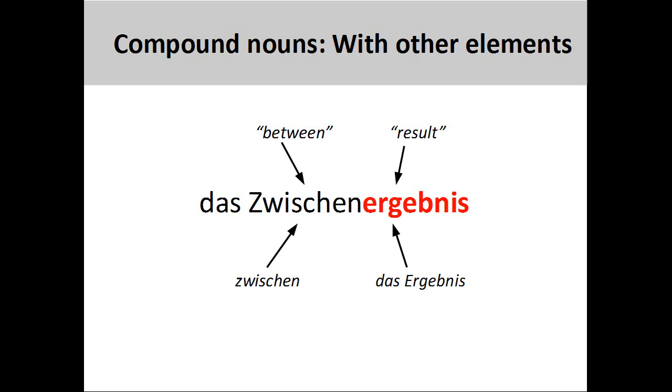The compound noun you see on the screen, das Zwischenergebnis, interim result, is comprised of the two-way preposition zwischen, between, and the neuter noun das Ergebnis, result.